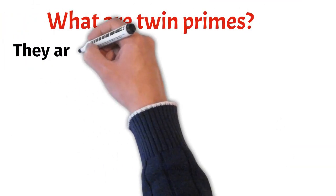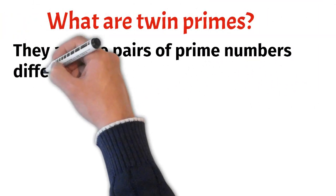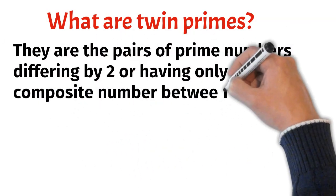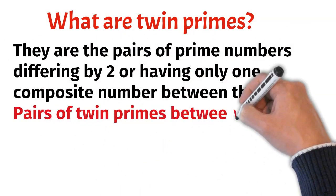What are twin primes? They are the pairs of prime numbers differing by 2 or having only one composite number between them.